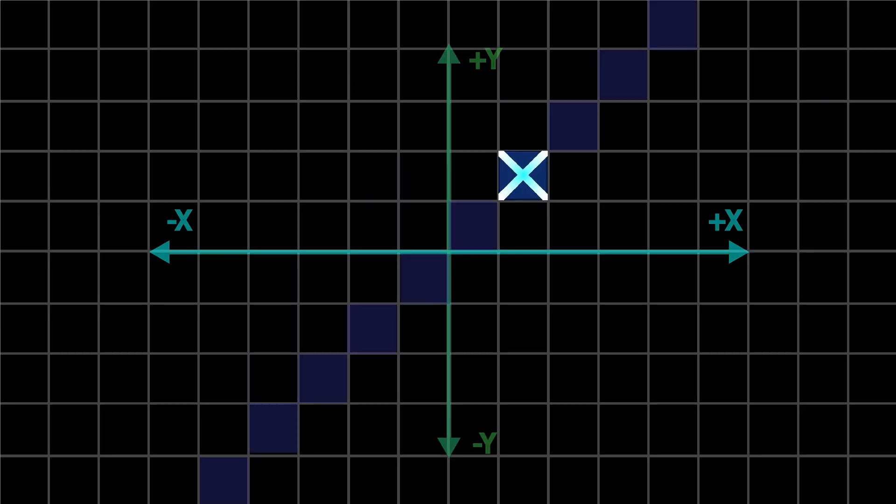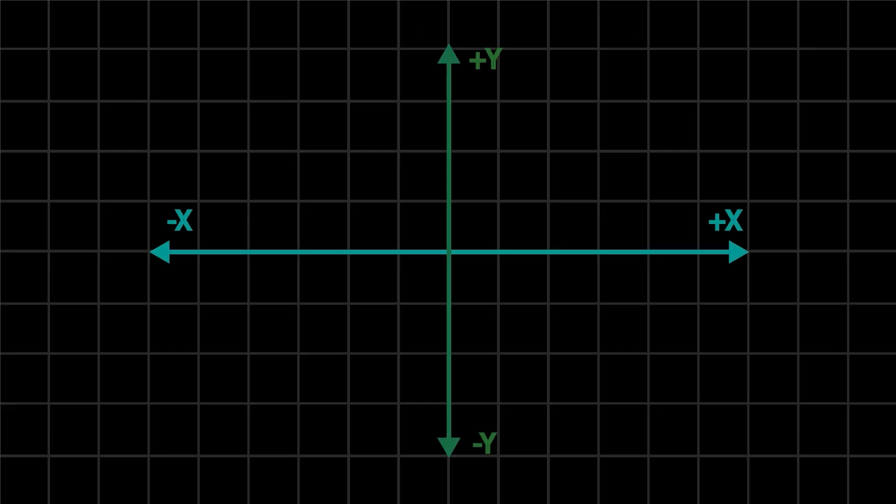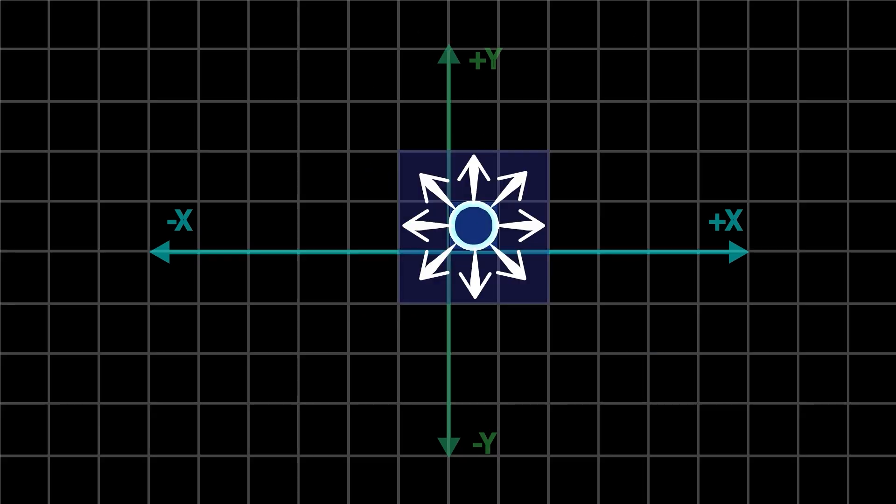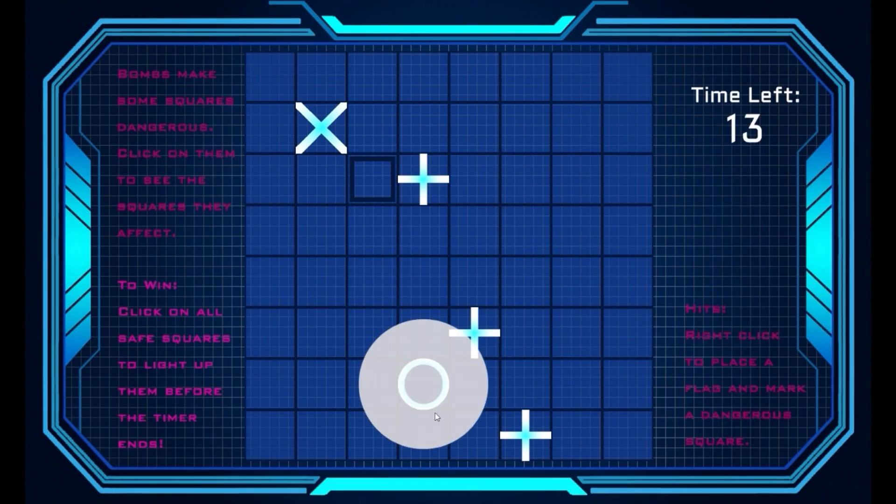Cross bombs hit rows and columns, X bombs hit diagonals, and O bombs affect a 3x3 square. It's coordinates in action.